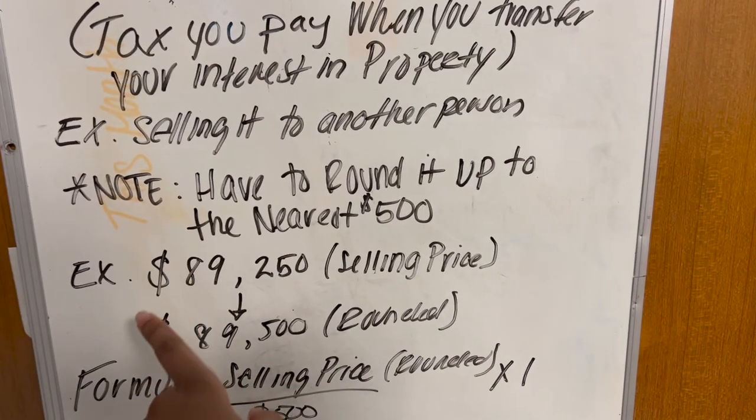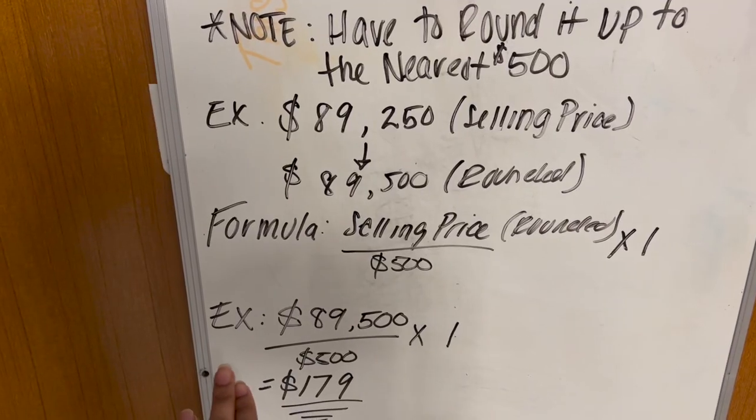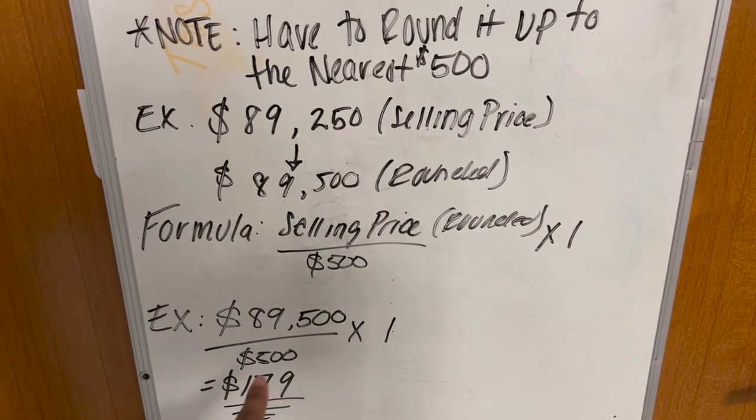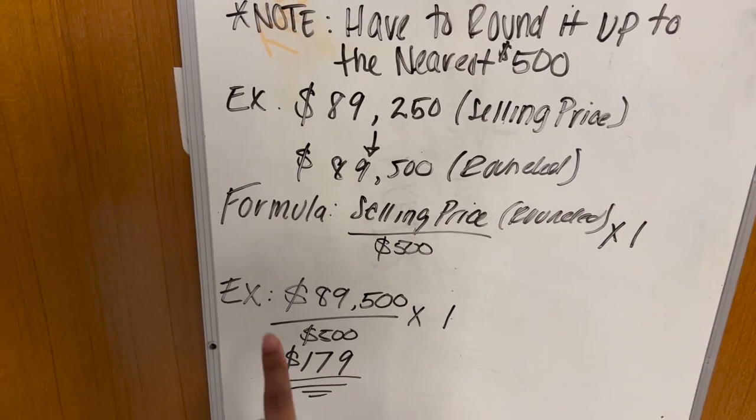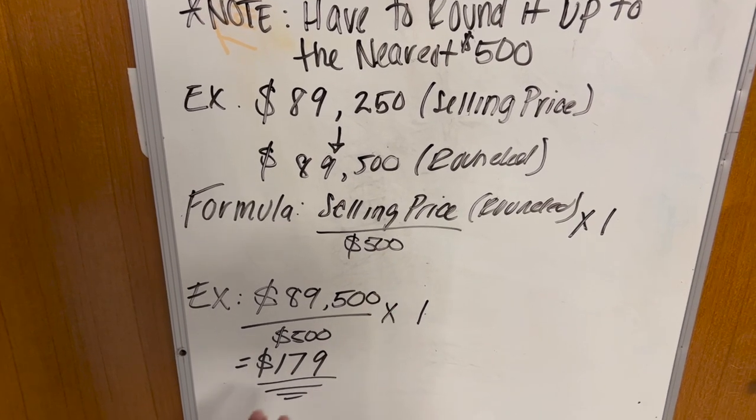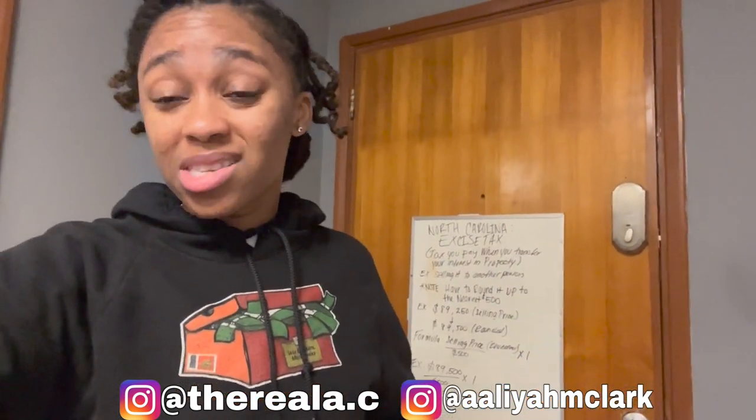An example using our $89,500 rounded selling price: $89,500 divided by 500, times 1, gives us $179. I know it's not a big amount, but when you're selling your property, prices and different fees are going to add up. It's the small things that add up at the end of the day. You want to know where your money is going, especially after you've invested in your home, so you can budget and set yourself up in the best way possible.